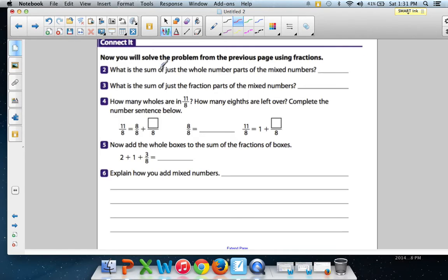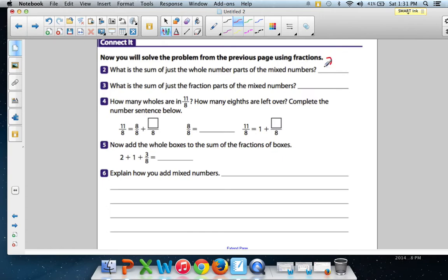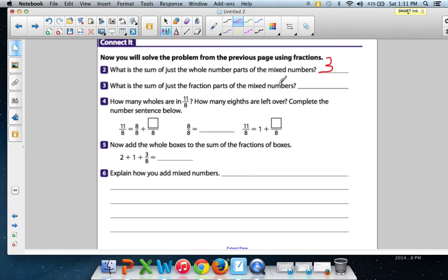What is the sum of just the whole number parts of the mixed numbers? That was from the problem we just looked at. So what is the sum of only the whole numbers? Remember whole numbers are not fractions. They're regular like full numbers. So what's just the whole number part? That would be the three, right? So let's write that. What is the sum of just the fraction part of the mixed number? So the whole thing is the mixed number. But what's the fraction part of the mixed number? That's that part right there. That's the three eighths. So let's write that. They just want to make sure you know that there's a whole part, the three, and there's a fraction part, the three eighths.